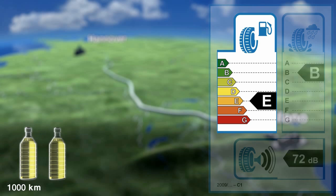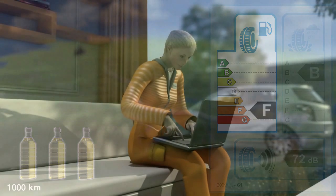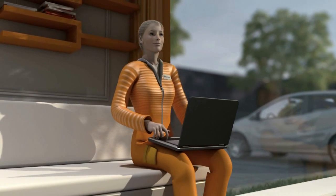A tyre from class E uses around 2 litres more fuel over the same distance, and a tyre from class F uses 3 litres more than a tyre from class B. D has not been given a value. So the issue of fuel is cleared up.